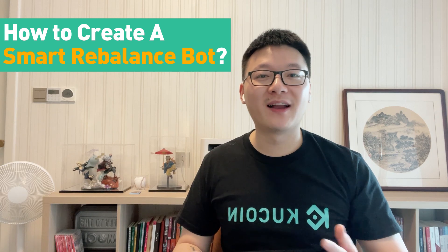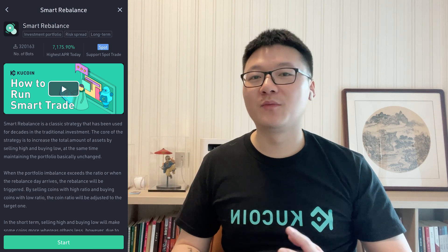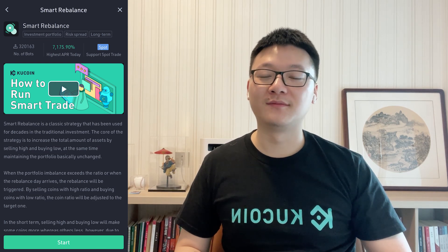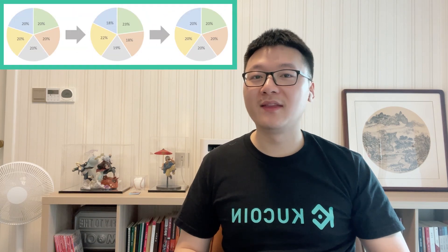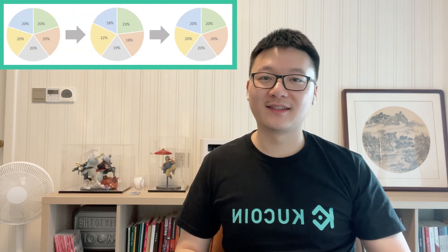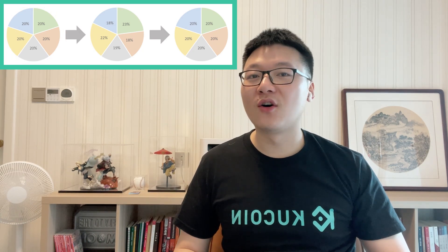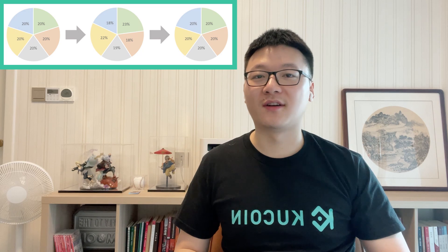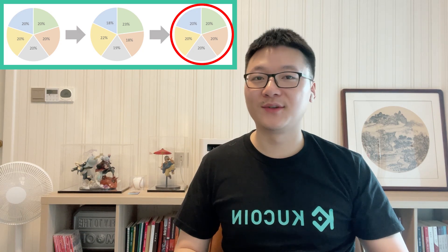Now let's talk about the Smart Rebalance bot. To simply put, if SpotGrid trading is to buy low and sell high between two coins, Smart Rebalance is to do so among all the coins in your portfolio. The core of the strategy is to increase the total amount of your crypto holdings while maintaining your initial portfolio percentage. Assuming that you have chosen 5 coins to invest and allocated 20% of your funds to each of them — as time goes by, some coins may pump and some just go down, and the percentage will change. Then the bot will help rebalance your portfolio back to the initial percentage, which is still 20% for each one.